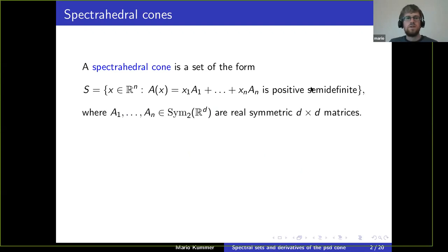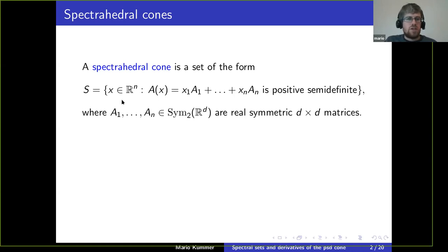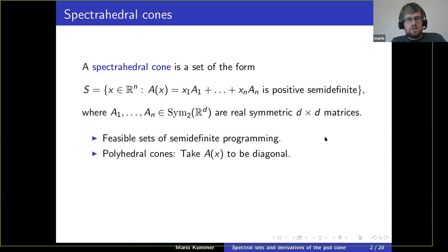We are interested in spectrahedral cones. We take some real symmetric d-by-d matrices A1 up to An, and then we look at all points x in R^n such that the corresponding linear combination of these matrices is positive semi-definite. This is a nice convex semi-algebraic set in R^n, and it's interesting because it's the feasible set of a semi-definite program.